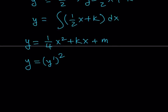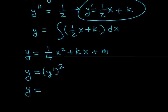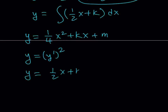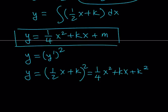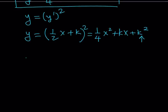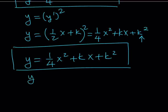So we can write our solution to this differential equation as y equals one fourth x squared plus kx plus k squared, where whatever k is, you square it to get your constant term. That's one solution. And obviously y equals zero also satisfies this equation, so it is also a solution. This brings us to the end of the second method.